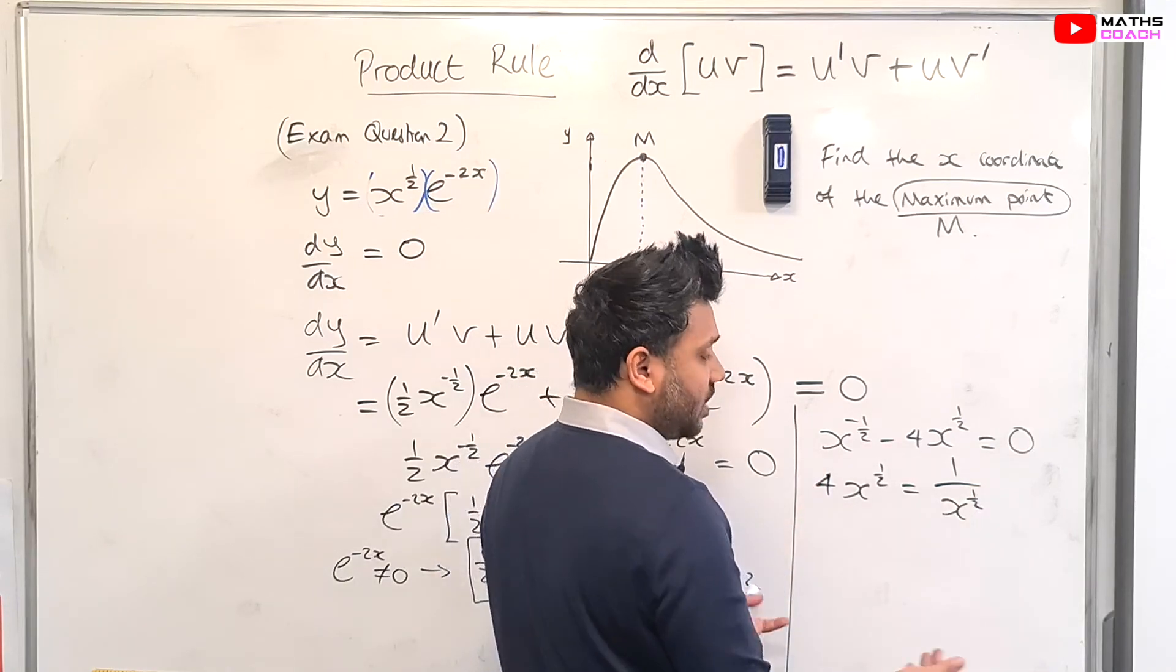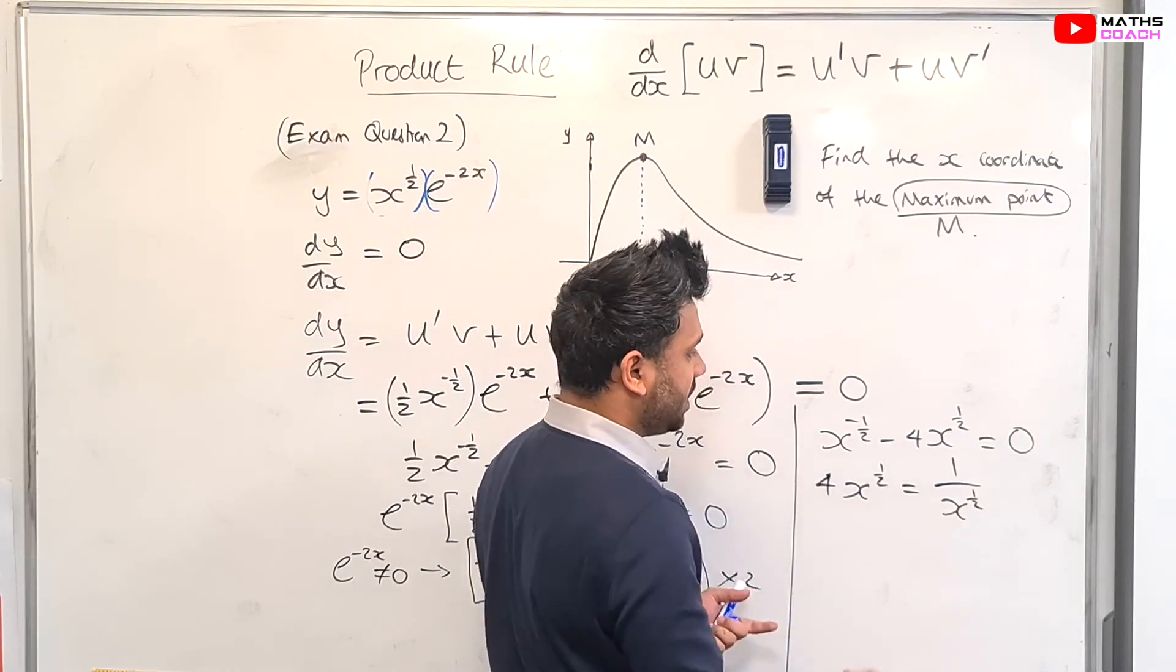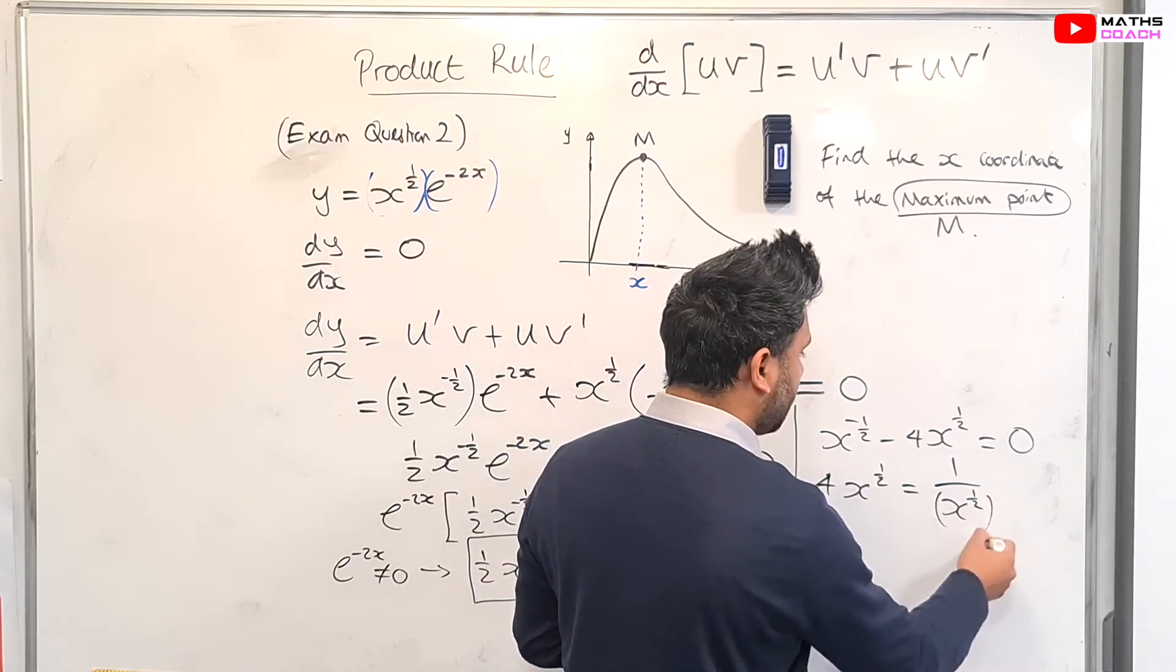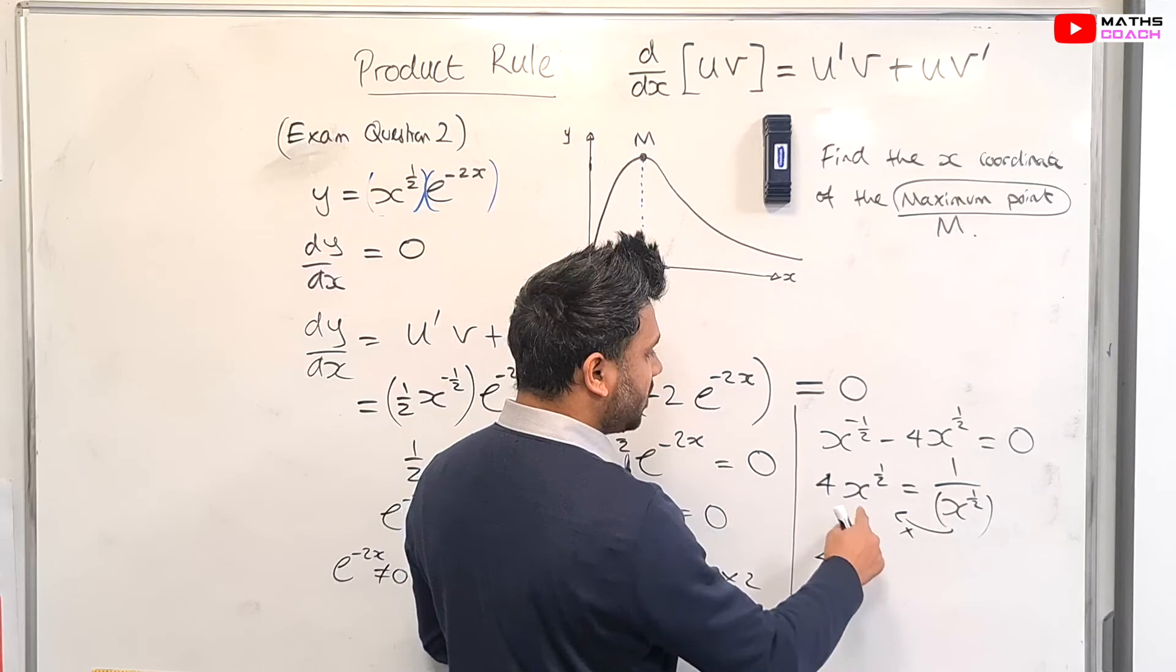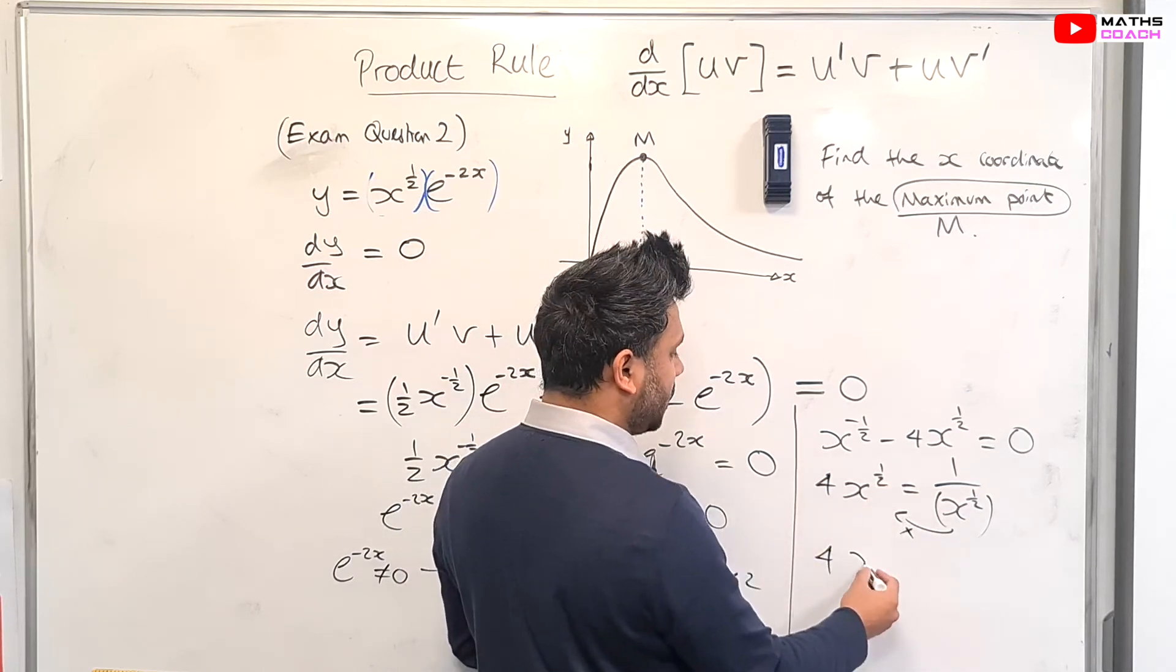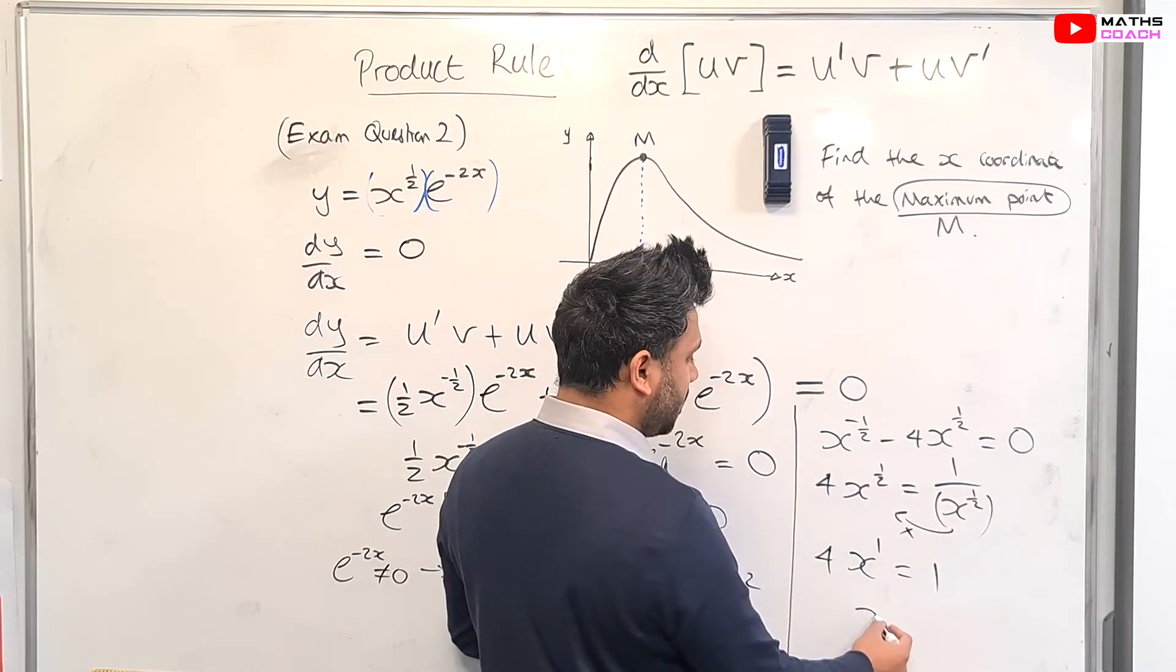And from our GCSE knowledge, we know that a power of a half means the same as the square root. So bring that to this side and multiply. So four times x to the power of a half times x to the power of a half is going to give you x to the power of one equals to one. Therefore, x is equal to a quarter.